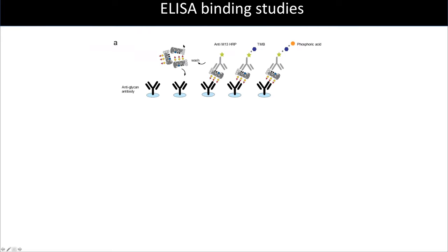Once our phage-glycan conjugates were made, the first step of validation was ELISA. 96-well plates are coated with purified monoclonal IgM antibodies that are typically used in clinical labs to determine the blood type. We got these antibodies from Dr. Larry Westbrook at the University of Alberta. Then we add the phage-glycan conjugates, wash to remove the non-binders, and detect the bound phage with an anti-phage antibody, followed by addition of the TMB substrate and phosphoric acid for detection.